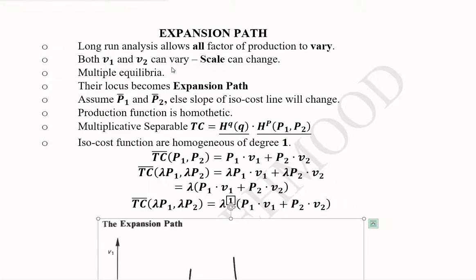After understanding the equilibrium of a firm, now we can understand this phenomenon of equilibrium in the long run. In the long run, it gives rise to a certain diagram which is known as the expansion path. And we will see why we call it expansion path.